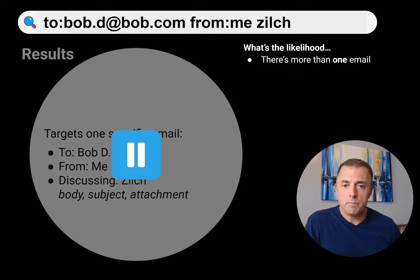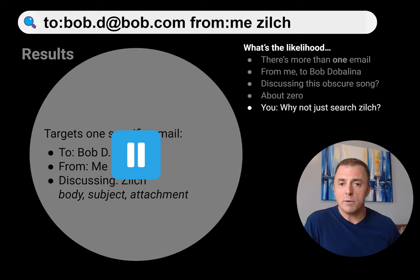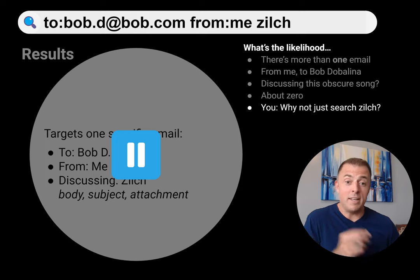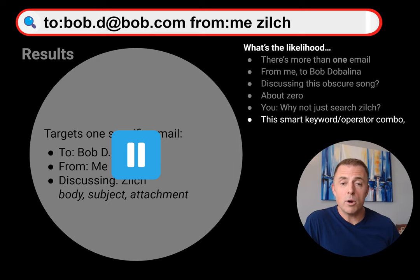Let's pause and talk about why this worked. What is the likelihood that there's more than one email from me to Bob Dabalina discussing this obscure song? About zero. And you might ask: why not just search "zilch"? You'd have a very good point — that would not have allowed me to show you how to use the two other operators. But if you can come up with that unicorn term that's probably not in any other emails, that's the shortest route to done. In any event, this search — this smart keyword-operator combo — is what hit the bullseye.